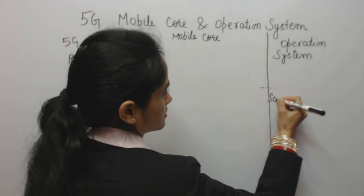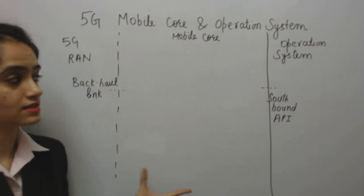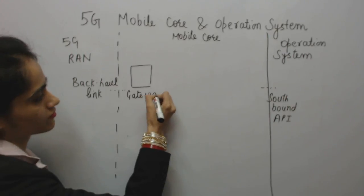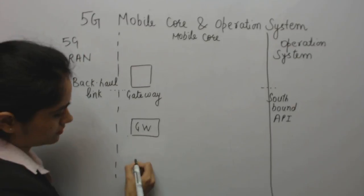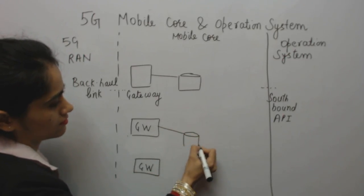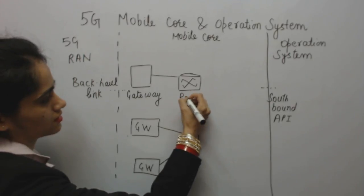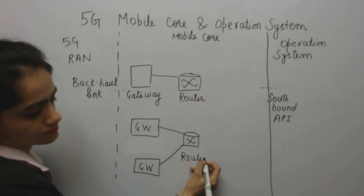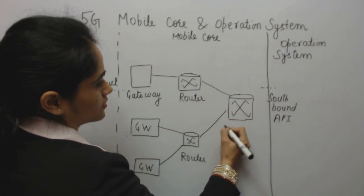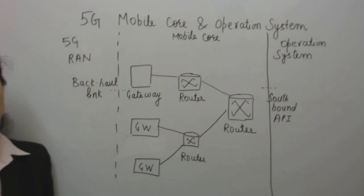The connection between RAN and mobile core uses a southbound API. Now let's discuss about the mobile core. In the mobile core we have gateways, written as GW. These gateways are connected to routers, and routers are connected to one another, meaning there is interconnectivity. The mobile core is then connected with the operation system via a southbound API.